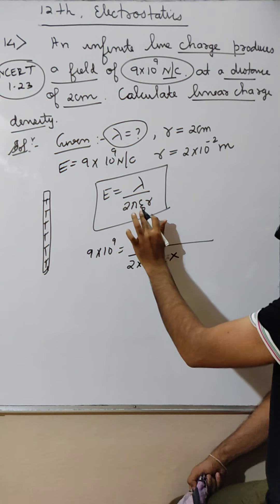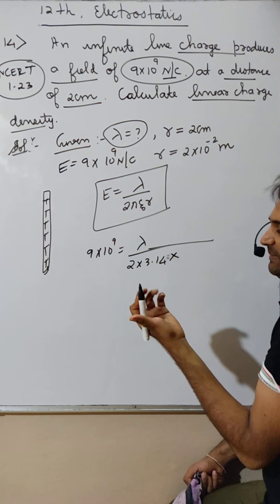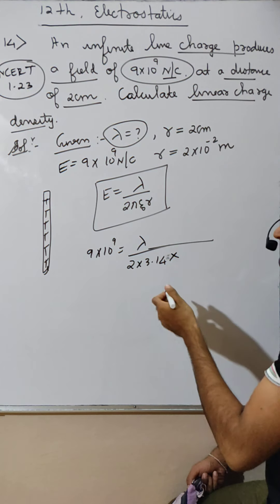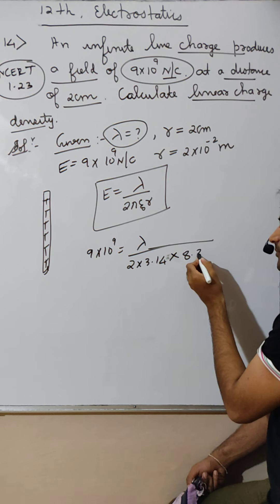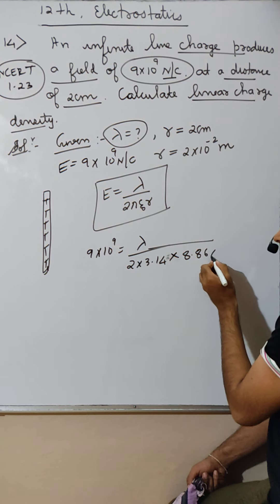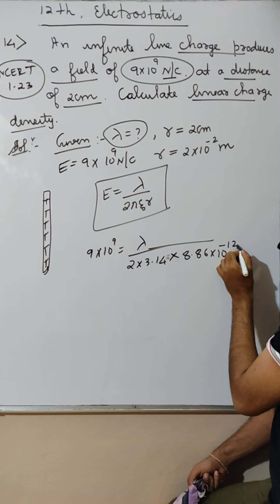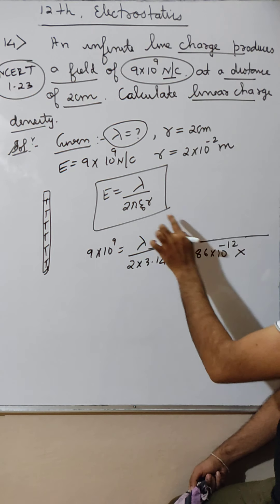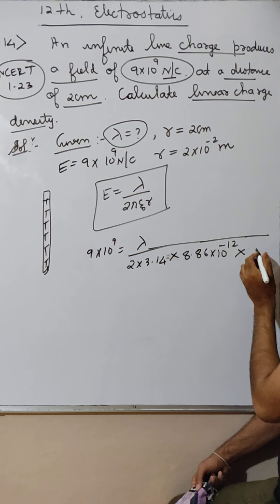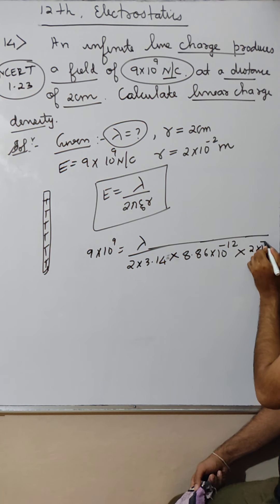2 pi, 2 into 3.14. Epsilon not ka value by hat karna hai. I have told epsilon not ka value first chapter starting. 8.86 into 10 raise to minus 12, multiplied by duri 2 into 10 raise to minus 2.